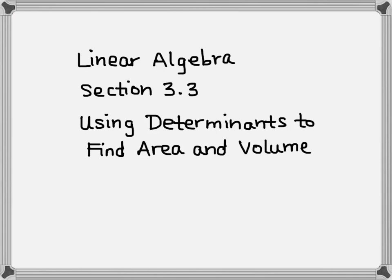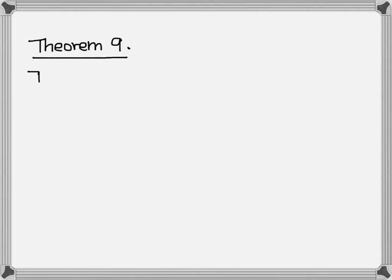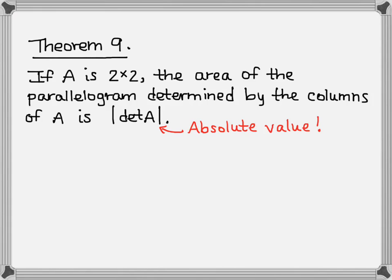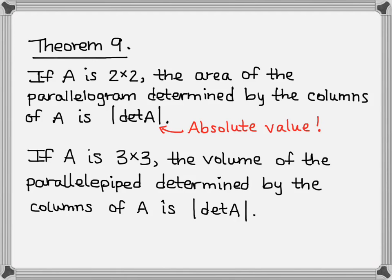This is a good demonstration of the geometric interpretation of determinants. I'm going to refer to Theorem 9 from your textbook, which states that if A is a 2 by 2 matrix, then the area of the parallelogram determined by the columns of A is going to be the absolute value of the determinant of A. We have to use the absolute value because area cannot be negative. The 3D version of this is: if A is a 3 by 3 matrix, the volume of the parallelopiped determined by the columns of A is the absolute value of the determinant of A.